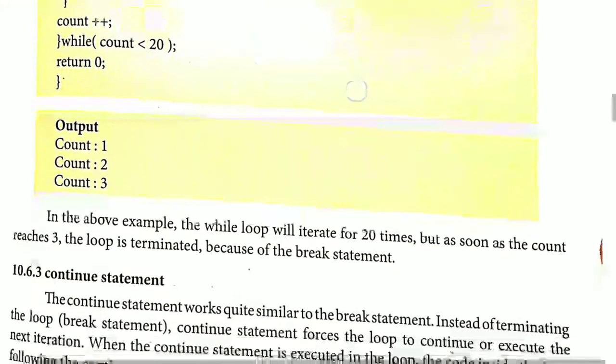After the break, the remaining iterations from 4 to 20 are not executed, even though the while condition count less than 20 would still be true up to 19. Since the break statement was used, it breaks all remaining loop iterations and comes out of the loop body, finishing the program. This is the working example of the break statement.